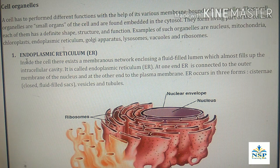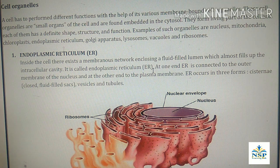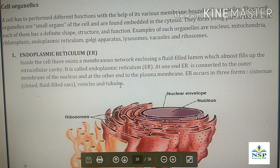The first cell organelle is endoplasmic reticulum. Inside the cell, there exists a membranous network enclosing fluid-filled lumena which almost fills up the intracellular cavity. It is called endoplasmic reticulum or ER. At one end, ER is connected to the outer membrane of the nucleus and at the other end to the plasma membrane. ER occurs in three forms: cisternae, vesicles and tubules.